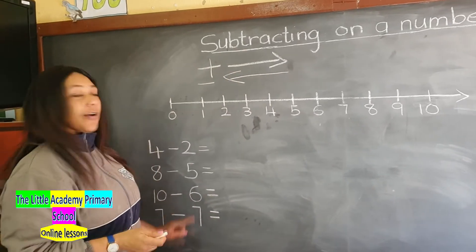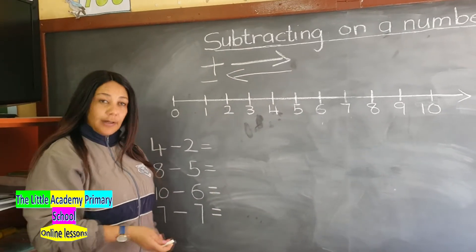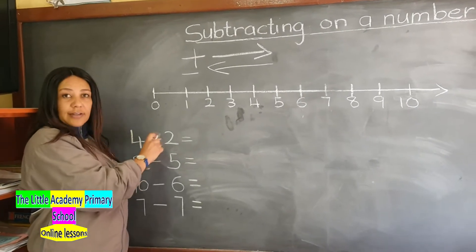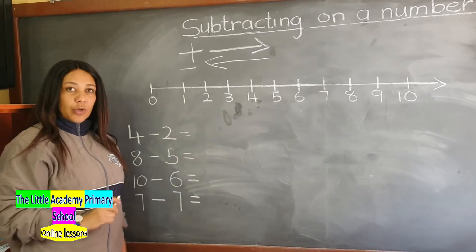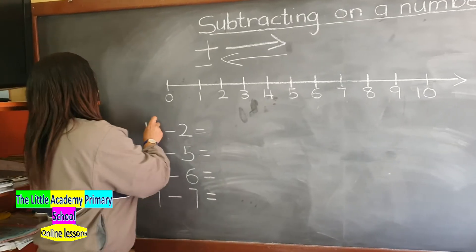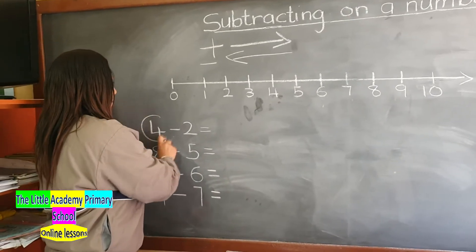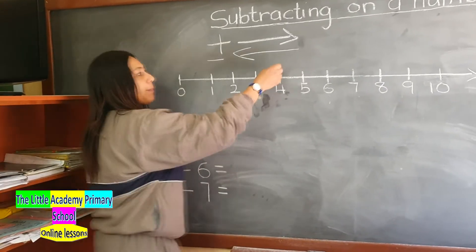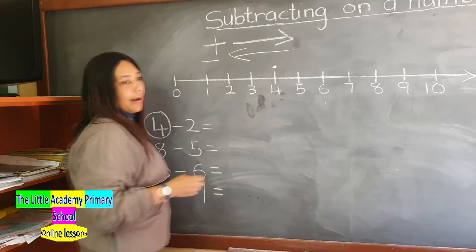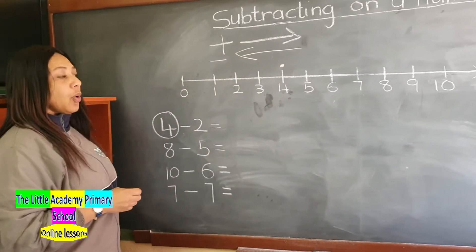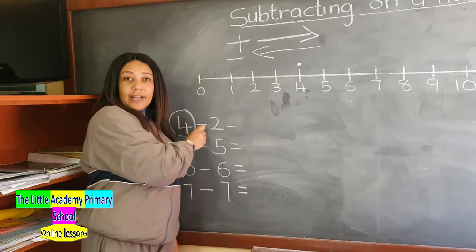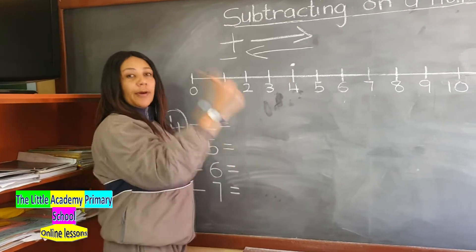I'll take for an example the sum 4 subtract 2. How do we do it? As we did last week, we take the first number, which is 4, and we plot it on the number line. There we go. So we are subtracting, and when we are subtracting, we move backwards.